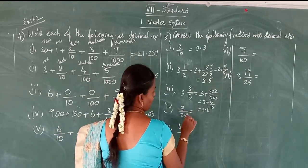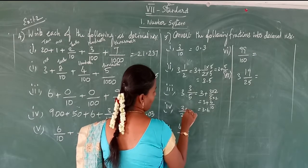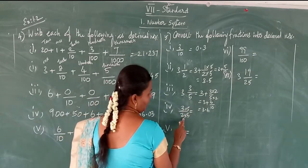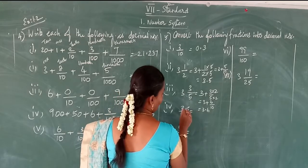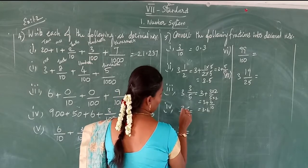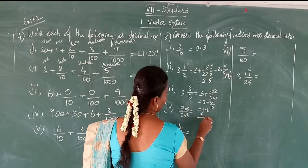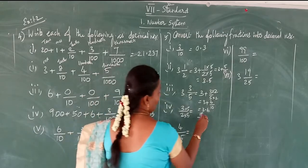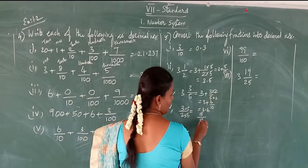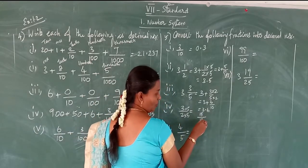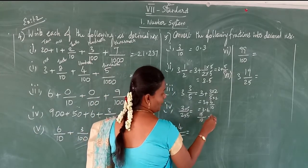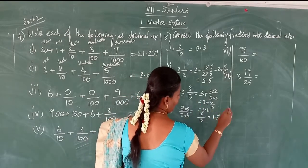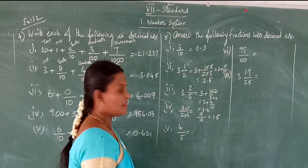See: 3 by 2. Multiply numerator and denominator by 5 — denominator becomes 10, numerator becomes 15. So 15 by 10 — only one decimal place. So 1.5.